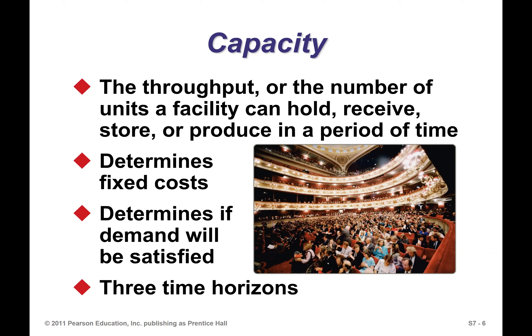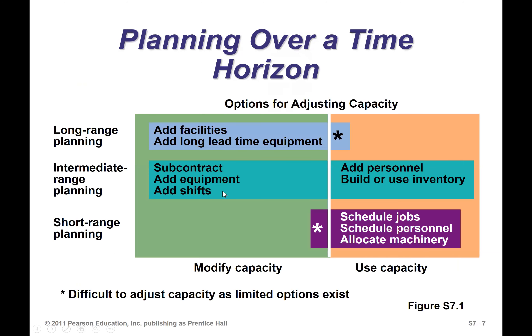We usually look at three time horizons: long range, intermediate range, and short range. For short range planning, you look at scheduling jobs — it's an everyday thing. You're scheduling jobs, scheduling personnel, and allocating machinery. For intermediate range planning, you're looking at possibly adding extra shifts, adding extra equipment, or even subcontracting in the short term.